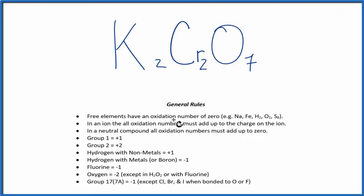So let's take a look. What do we know? We know that group 1, potassium is in group 1, those have a charge of plus 1. So the oxidation number is plus 1.